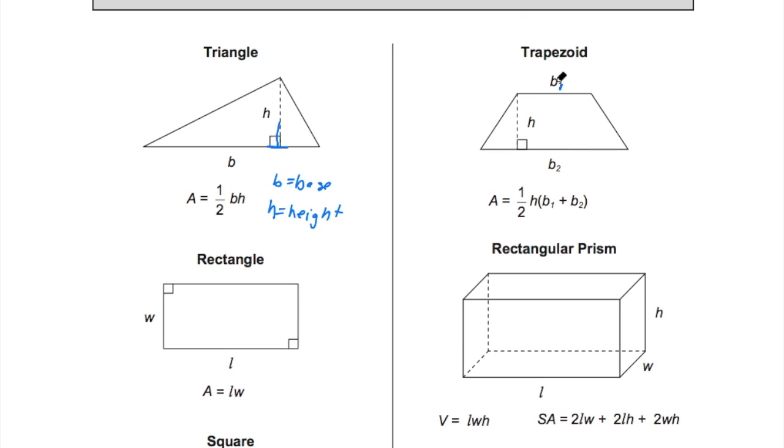For a trapezoid, we have two bases, one up top and one below, and they are the two sides that are parallel to each other. They have to be added first, then multiplied by the height, which is perpendicular, and then you need half of that.